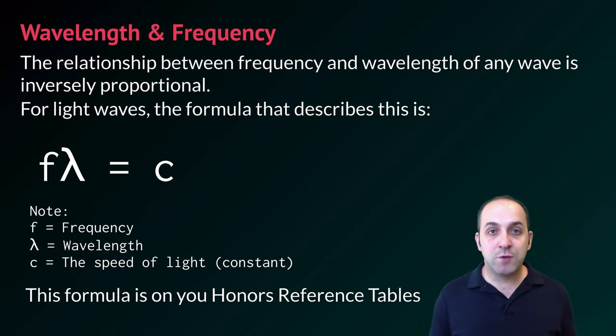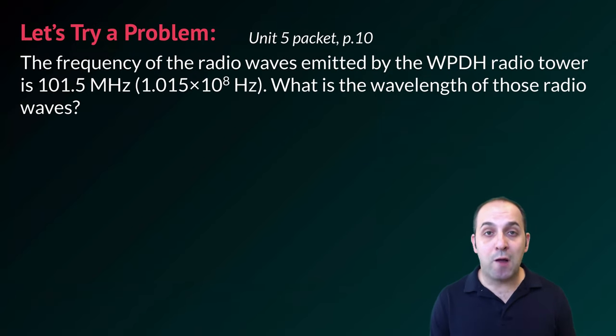The mathematical relationship between wavelength and frequency for electromagnetic radiation can be stated as follows. The formula is given to you on your honors reference table. The product of the frequency times the wavelength is always going to equal the constant value of the speed of light. Using this, we can analyze the frequency and the wavelength of any particular photon of light, if we really want to. Let's try a problem that does this.